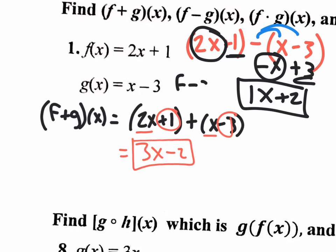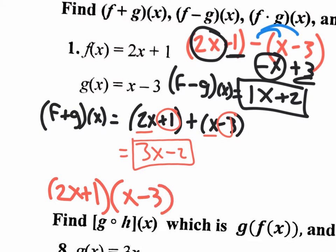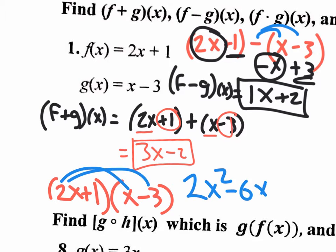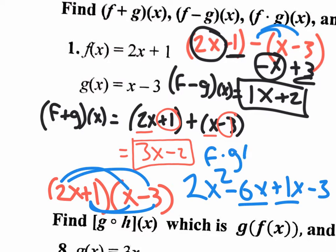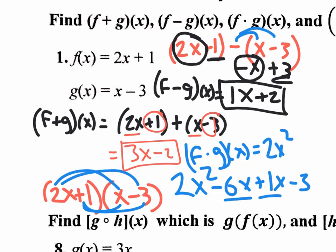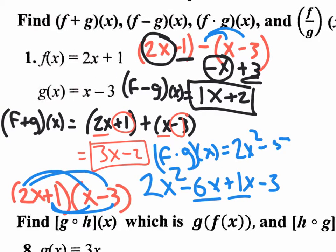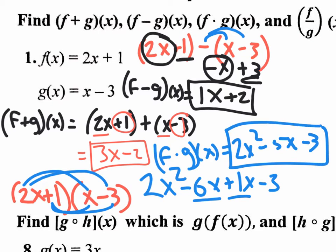And this is the answer for f minus g of x. f minus g of x — that's the answer right there. So it's all pretty straightforward. If you were going to multiply f times g of x, you take your f of x function, 2x plus 1, and multiply it by your g of x function, which is x minus 3. You have to distribute the way we normally do: 2x times x is 2x squared, 2x times negative 3 is negative 6x, 1 times x is positive 1x, and 1 times negative 3 is negative 3. Combine your middle terms, so the answer is 2x squared minus 5x minus 3.